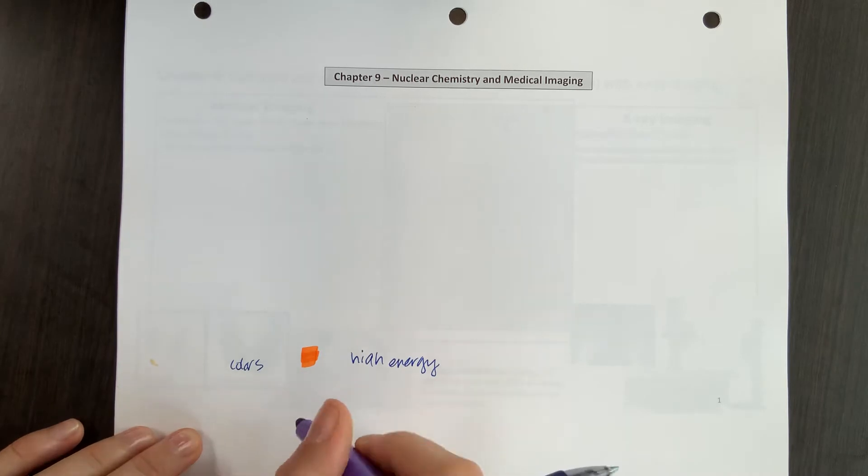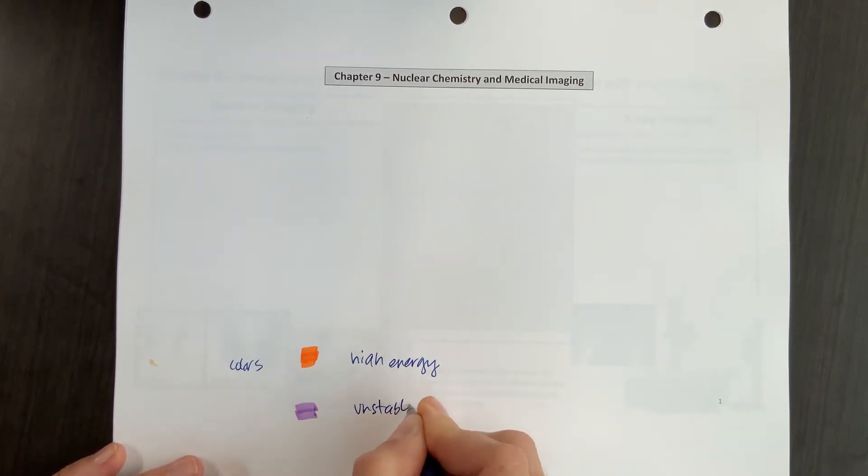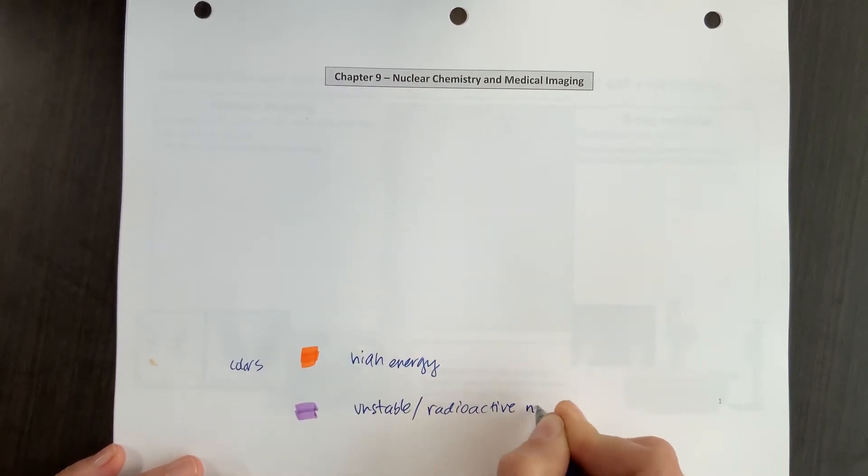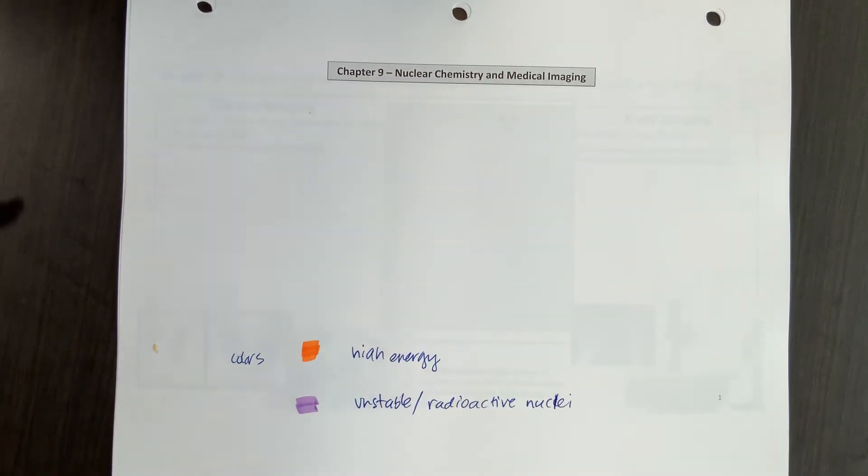We will also continue to use purple for our unstable or radioactive nuclei. And then we will also continue to use green for our atomic numbers. And remember, the atomic number is the number of protons. So same colors from the last chapter, we will continue to use this chapter.